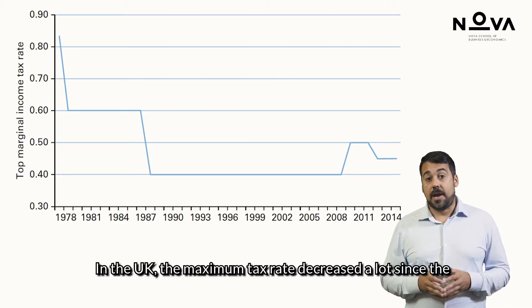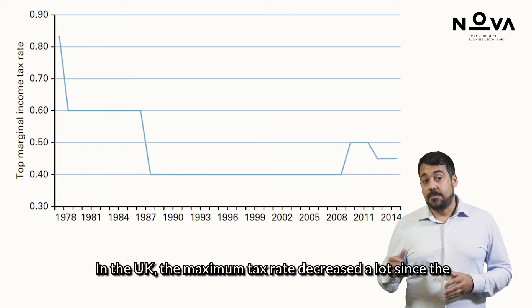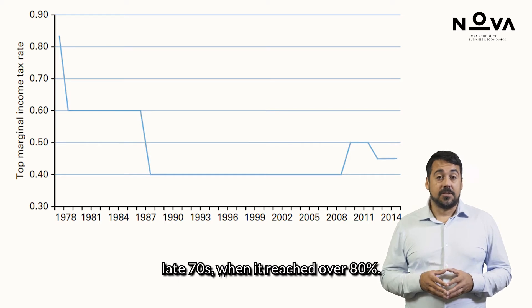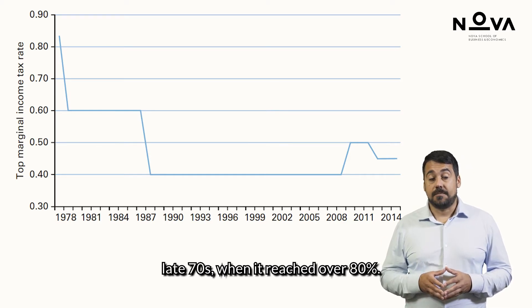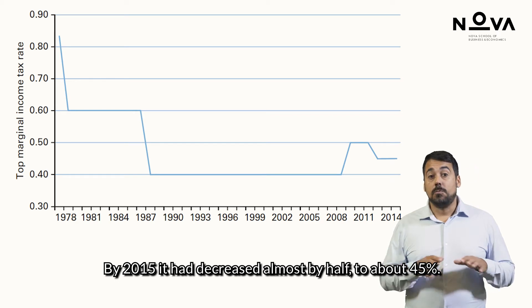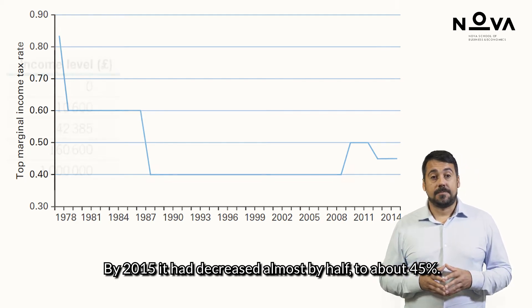In the UK, the maximum tax rate decreased a lot since the late 1970s, when it reached over 80%. By 2015, it had decreased almost by half, to about 45%.